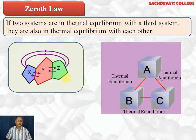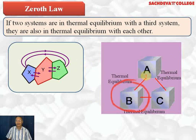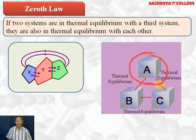With the help of a diagram, we are explaining this phenomenon. Here, Y is in thermal equilibrium with X as well as Z, therefore X and Z are also in thermal equilibrium with each other. On this diagram we can see that A is in thermal equilibrium with B, and C is also in thermal equilibrium with A, so B and C are also in thermal equilibrium.